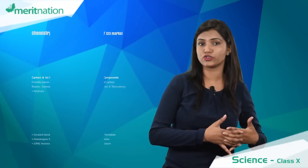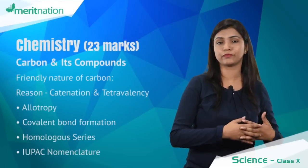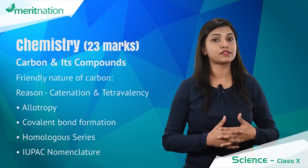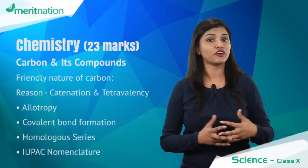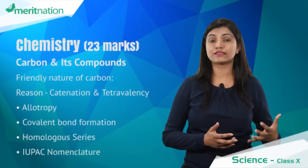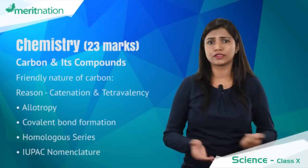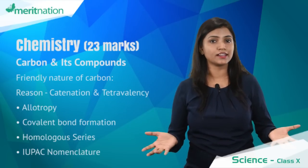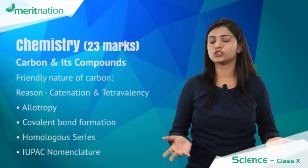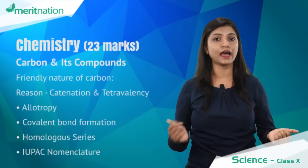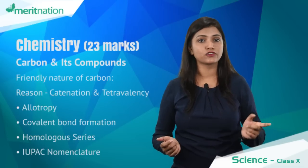As far as the syllabus is concerned, we have got two chapters in the chemistry portion making up 23 marks. The chapter carbon and its compounds - it is very important to know the friendly nature of carbon and the covalency of carbon. We know the reason behind it, yes, tetravalency and catenation. We need to write for a one mark question, and for two marks or more we need to explain these.